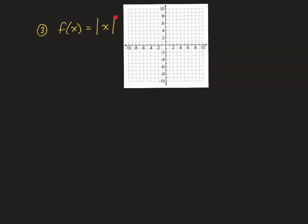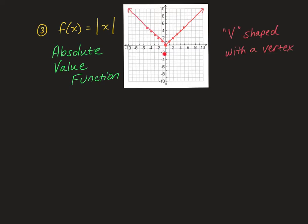The next parent function is f of x equals the absolute value of x. This basic function has a vertex at (0, 0), with a perfect diagonal going up both ways. It's a v-shaped function. The vertex is the point that changes direction — it comes down, stops, changes direction, and goes back up the other way.